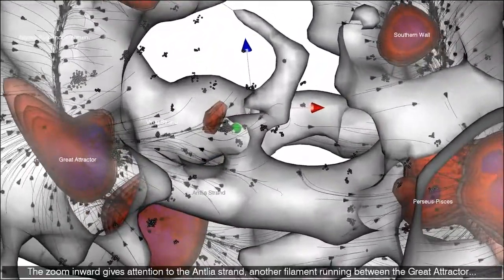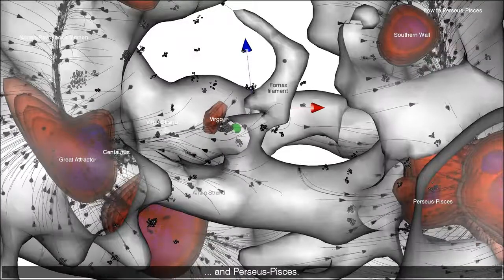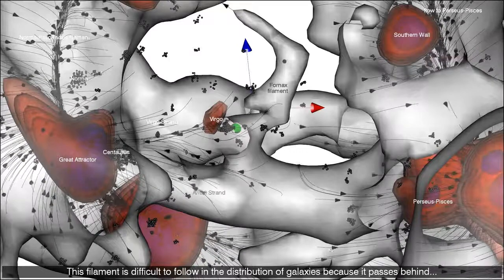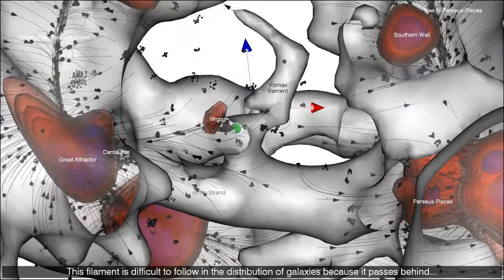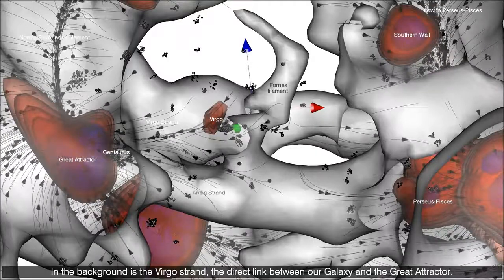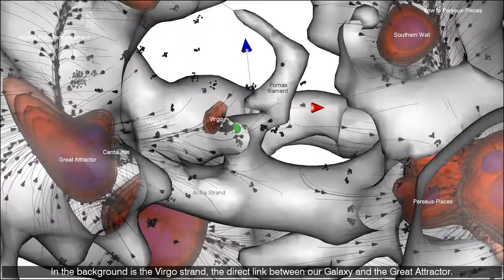The zoom inward gives attention to the Antlia strand, another filament running between the great attractor and Perseus Pisces. This filament is difficult to follow in the distribution of galaxies because it passes behind the zone of obscuration, but it is well defined in the V-web. In the background is the Virgo strand, the direct link between our galaxy and the greater attractor.